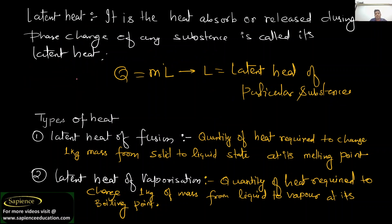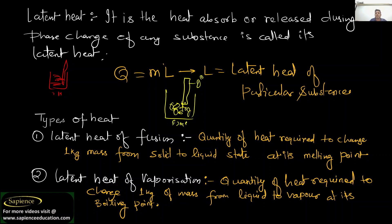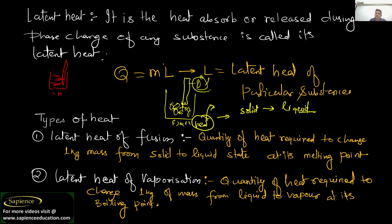To summarize: when you apply heat to water, temperature rises. But when ice is at zero degree Celsius and you apply heat, there is no rise in temperature — the heat converts the solid body into liquid. The heat required during this phase change is known as latent heat. Latent heat L equals Q by m, that is, heat required divided by mass of the substance.